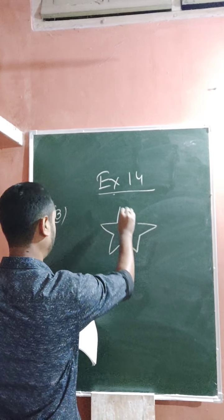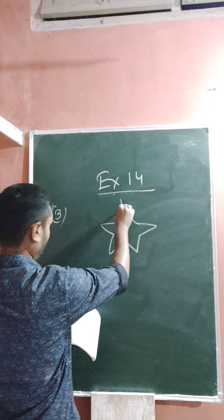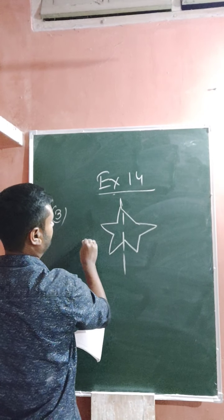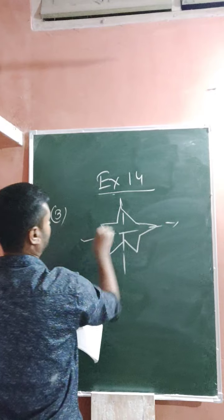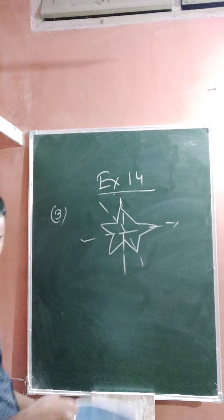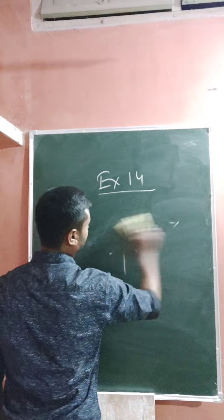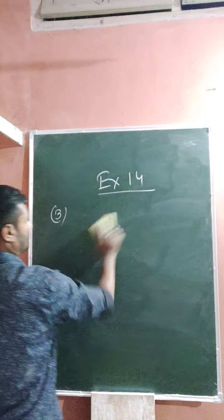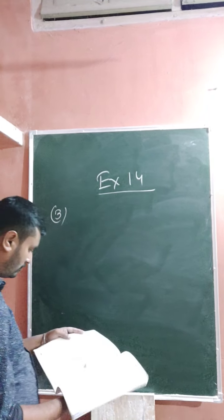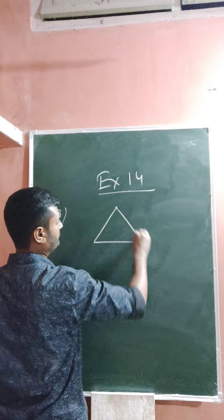So the star has multiple lines of symmetry — if you draw one line like this, again like this, again like this — so this figure has multiple lines of symmetry.